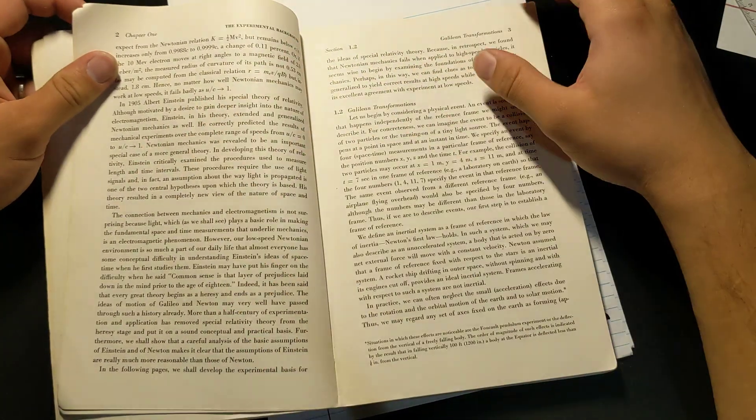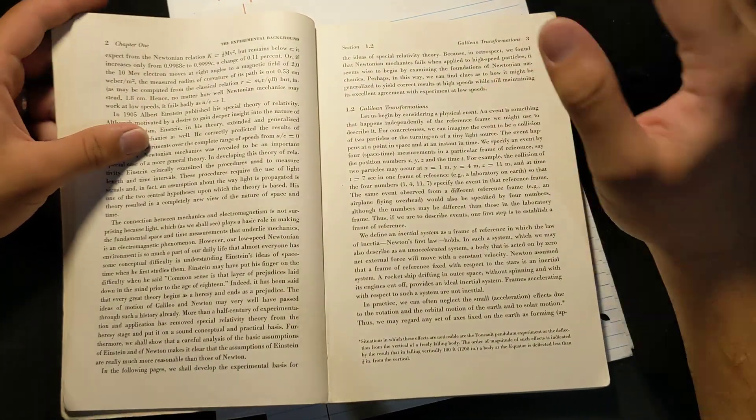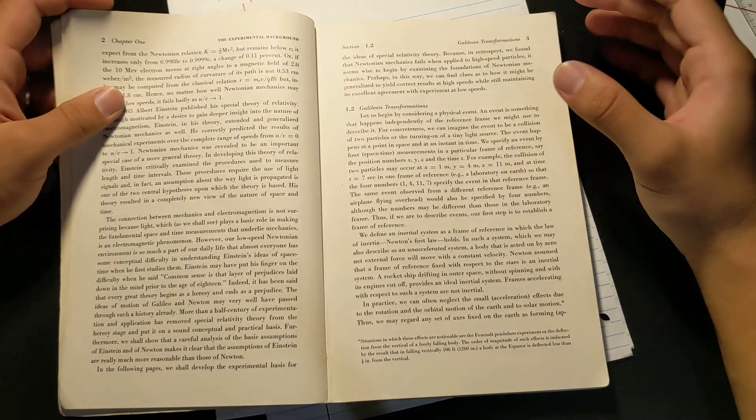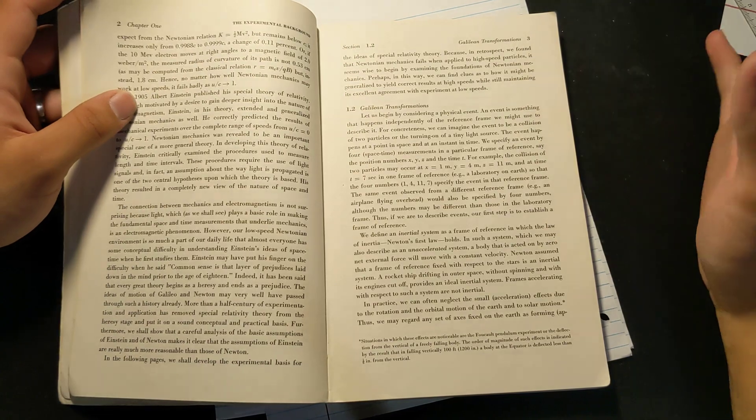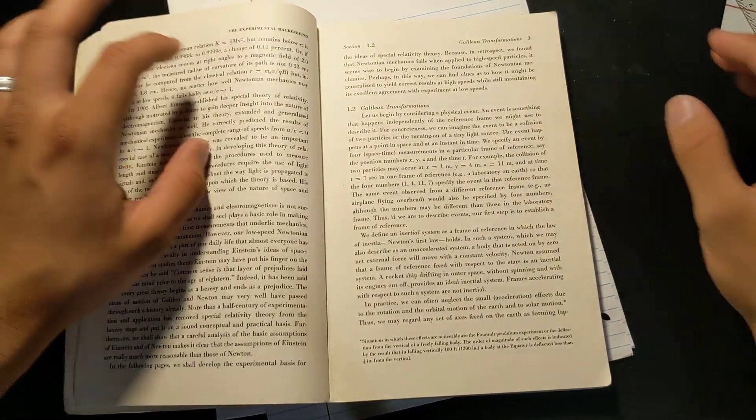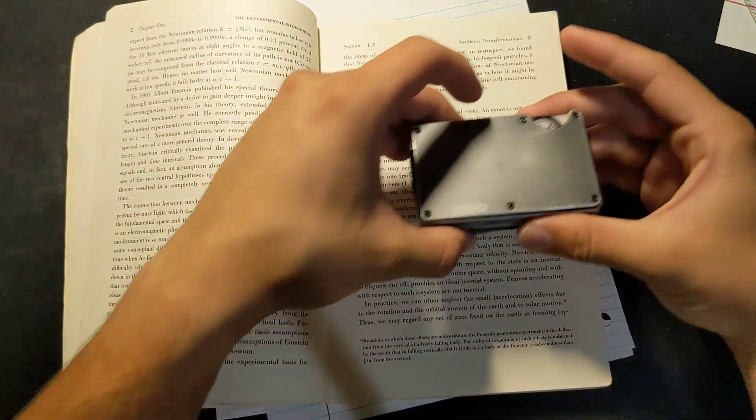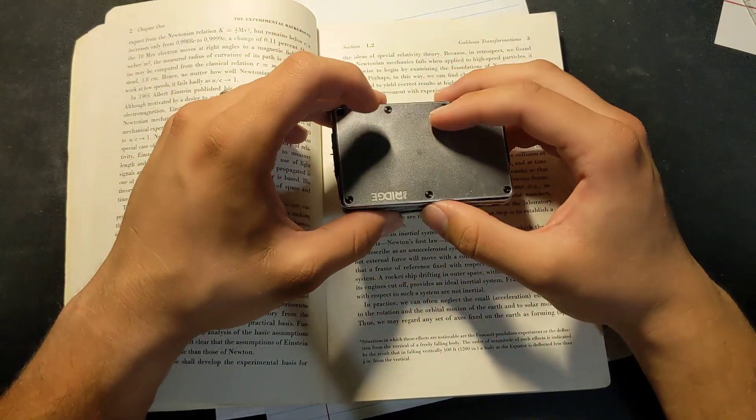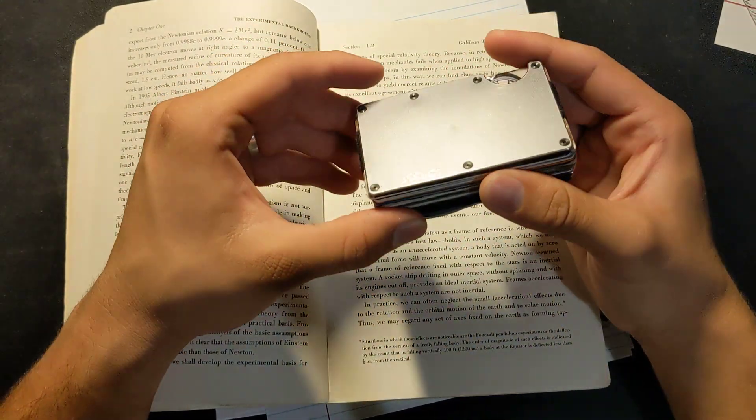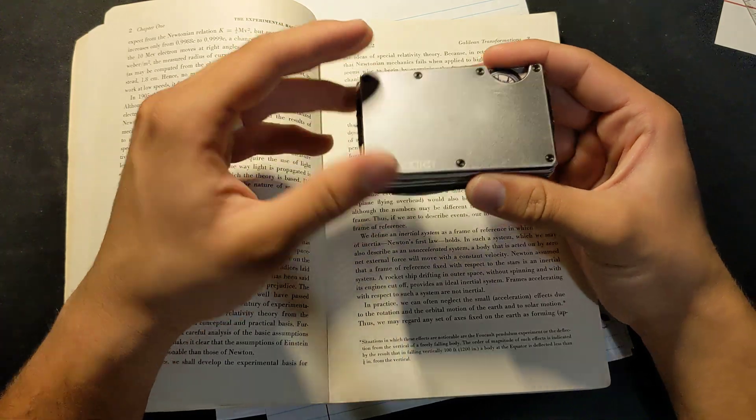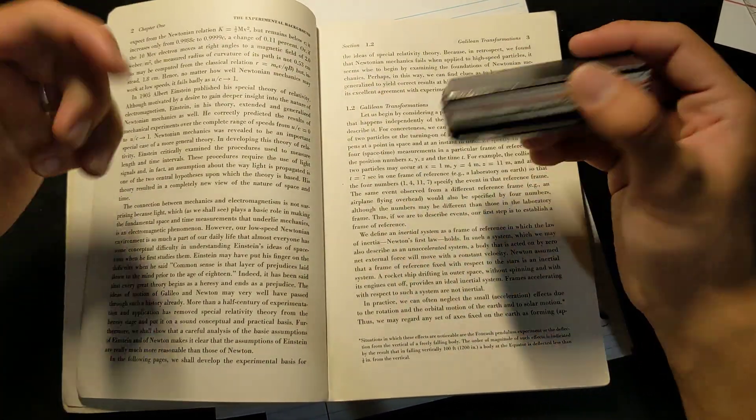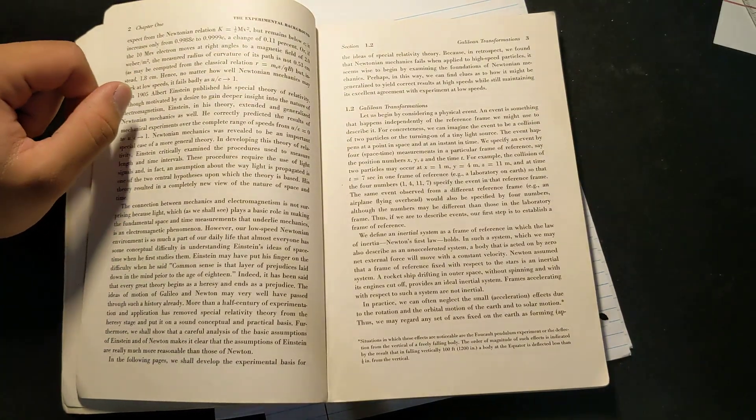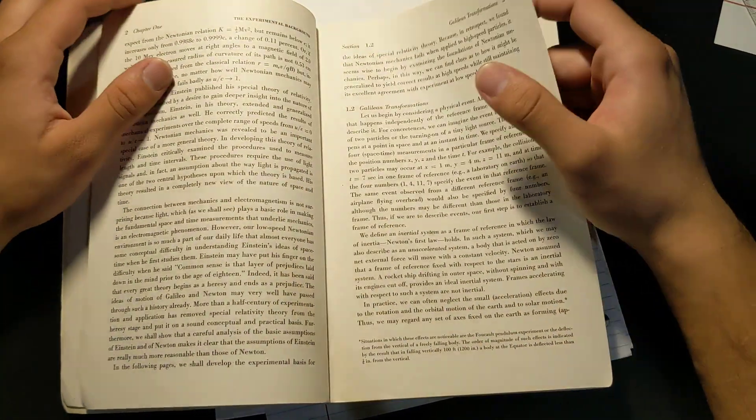First off, it walks you through the original ideas of relativity, and something called Galilean relativity, which is what we're all used to seeing. Galilean relativity is really simple, and it says that if I'm on a moving bus and I throw a football at 20 miles an hour, and the bus is going 25 miles an hour, how fast is the ball actually moving relative to the Earth? And the answer would be 45 miles an hour.